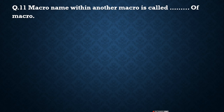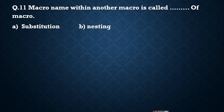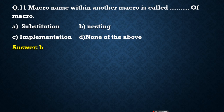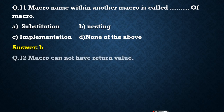Next question: A macro name within another macro is called a dash of macro. Options are: A) substitution, B) nesting, C) implementation, D) none of the above. The correct answer is B, nesting of macro. When you write any function within another function, or a macro within another macro, it is called nesting of macro.